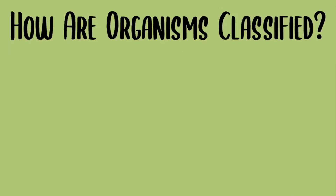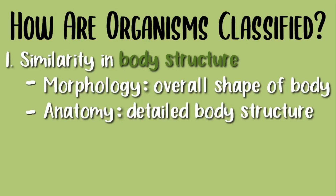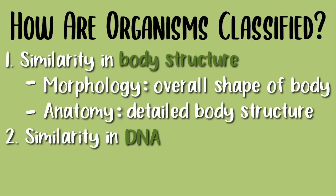There are two ways in which organisms are classified. The first way is the similarity in body structure. This includes morphology, which is the overall shape of the body, and anatomy, which is the detailed body structure. The second way is the similarity in DNA.